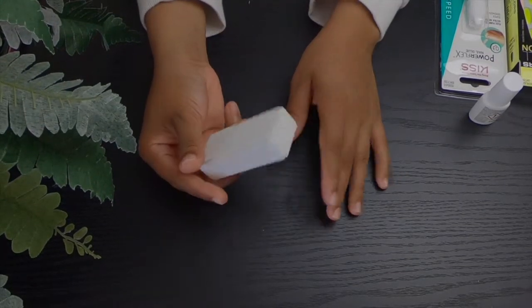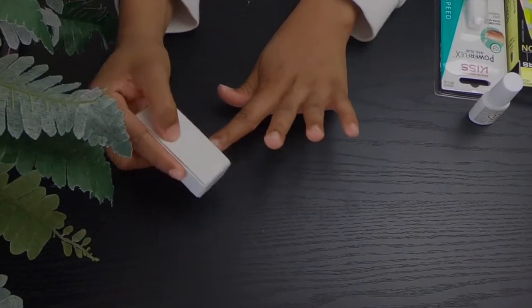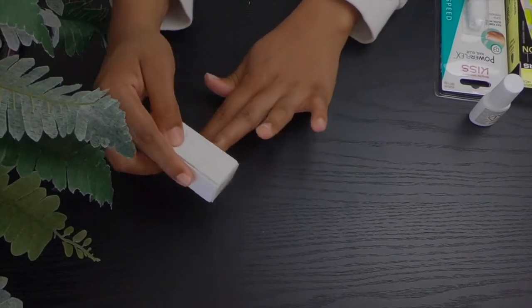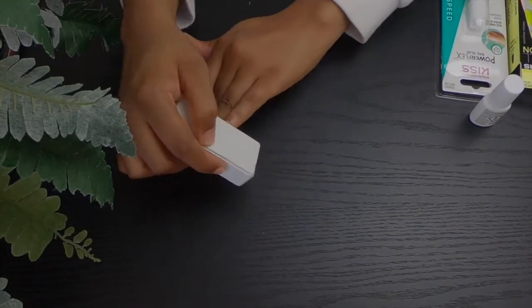Now I'm going in with this buffer here. It has different sides. I'm just going to use the file side to go ahead and file my nails down, and then I'm going to use the buff side to buff my nails to make them rough so it makes the press-on nails apply a little better.